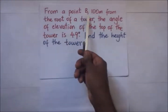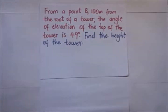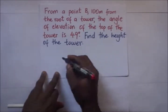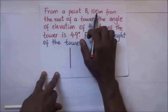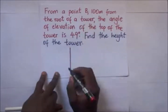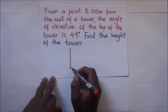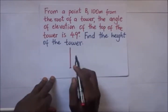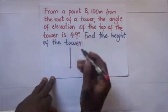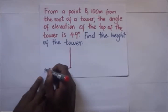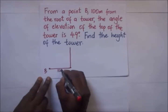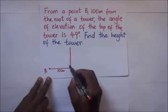Looking at this example: from a point B, 100 meters from the root of a tower, the angle of elevation of the top of the tower is 49 degrees. Find the height of the tower. Let's do a sketch — we have a tower here, and from point B, which is 100 meters from the root of the tower, this is the root of the tower and point B is here.